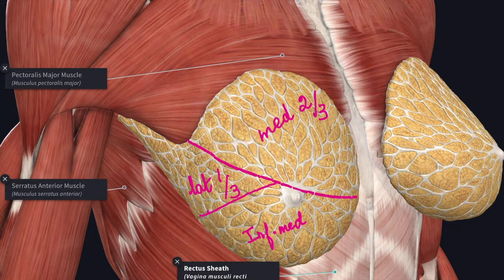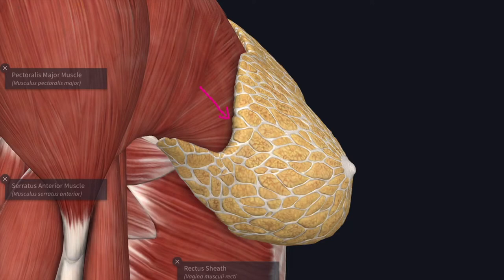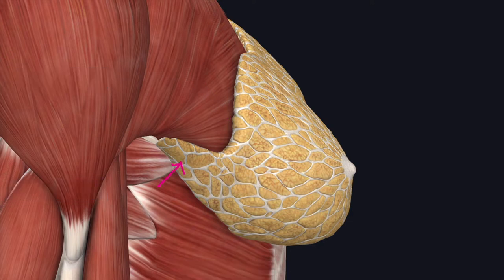Deep projections from the glandular parenchyma sometimes penetrate the superficial part of the pectoralis major muscle. The retromammary space contains loose connective tissue which intervenes between the base of the gland and the deep fascia covering the structures of the mammary bed. As a result the normal breast can be moved freely over the pectoralis major, but during invasion of breast carcinoma the gland is fixed to the pectoralis major muscle.